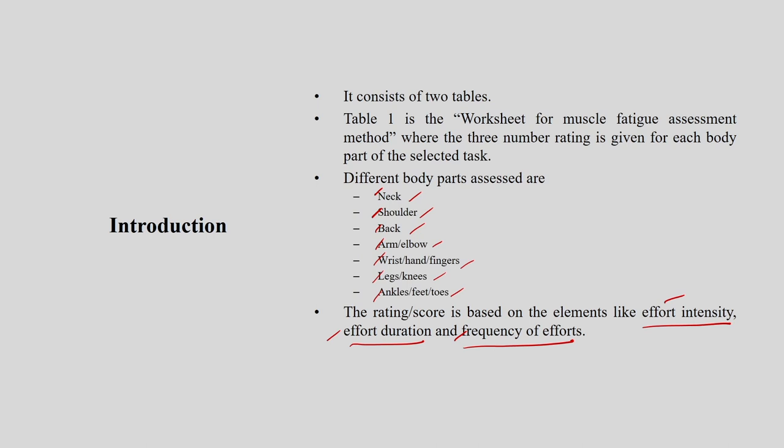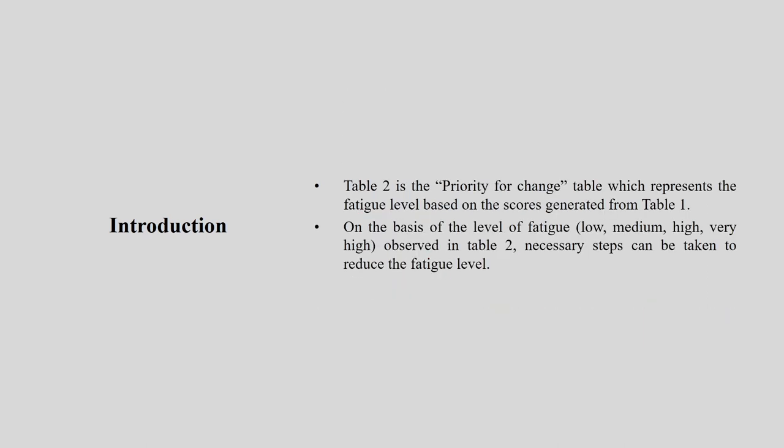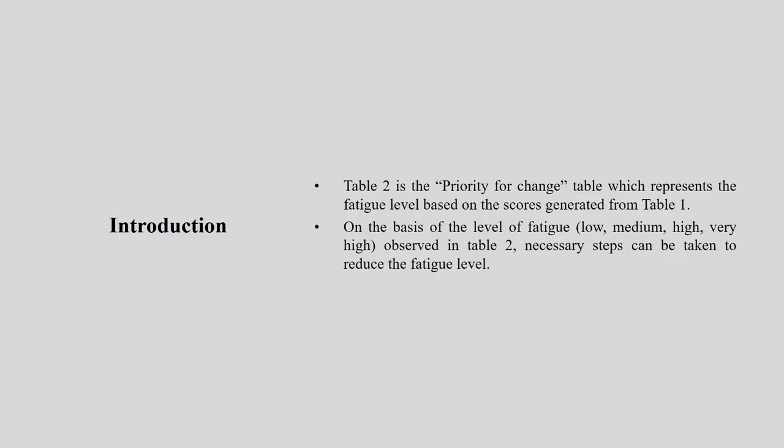Three major components — effort intensity, effort duration, effort frequency — are evaluated for each body part: neck, shoulder, back, arm, elbow, wrist, hand, fingers, legs, knees, ankle, feet and toes. Table 2 is the priority for change table, which represents the fatigue level based on the scores generated from Table 1. Based on the level of fatigue — low, medium, high, very high — necessary steps or interventions can be taken to reduce the fatigue level.